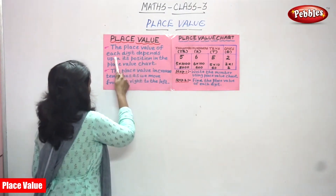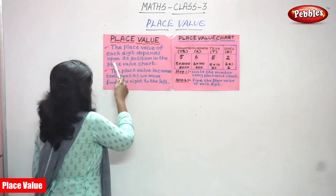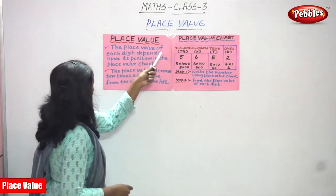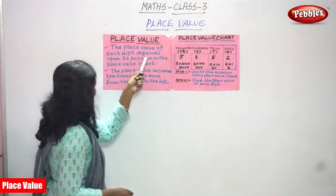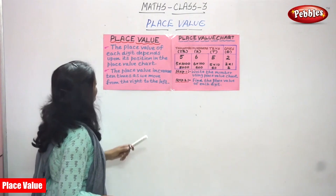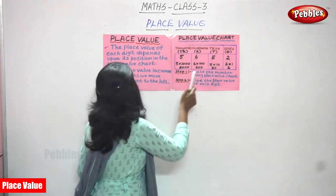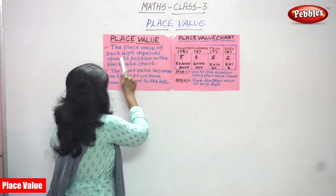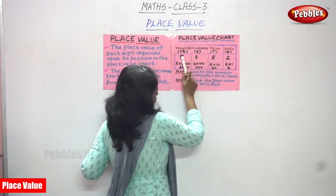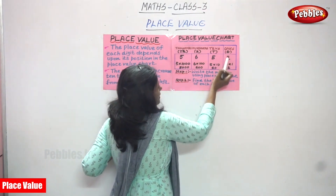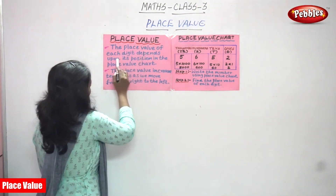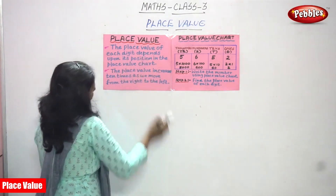The place value of each digit depends upon its position in the place value chart. This is the place value chart — each digit depends upon its position. The positions are: ones, tens, hundreds, and thousands.